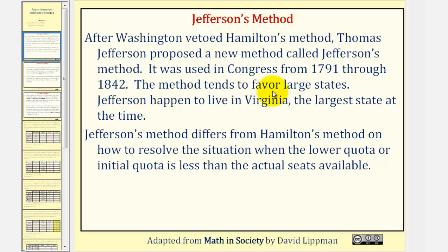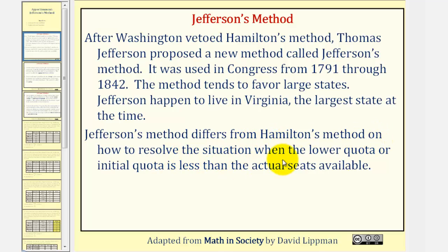The method does tend to favor large states, and Jefferson happened to live in Virginia, the largest state at the time. Jefferson's method differs from Hamilton's method in how it resolves the situation when the lower quota or initial quota is less than the actual seats available.